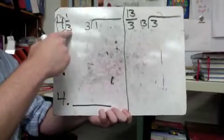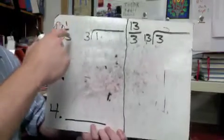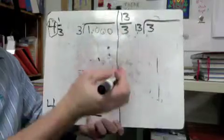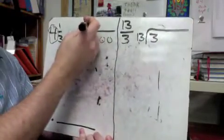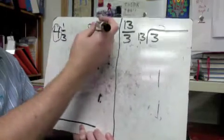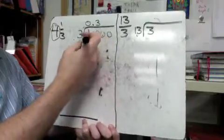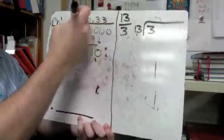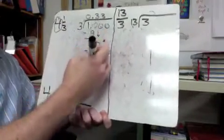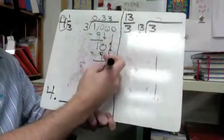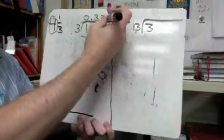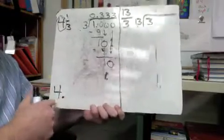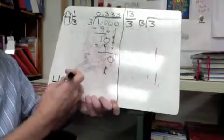Starting with four and one-third, I put the four down as my whole number and just work out what the fraction part is. I have one divided by three, with decimal zeros after it. Three can't go into one, so I put zero and bring the decimal up. Three goes into ten three times; three times three is nine, take away equals one, bring down zero. Three goes into ten three times again — we've got our pattern, so the three just keeps repeating.